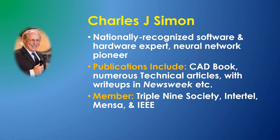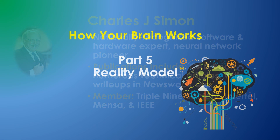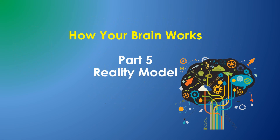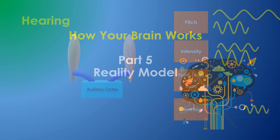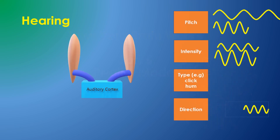How Your Brain Works, Part 5: The Reality Model. In this video series I'm presenting a model of how the human brain works with an eye toward creating AGI, Artificial General Intelligence. In the remaining videos I will describe functionality which seems necessary for AGI, but which is not generally included in today's AI thinking.